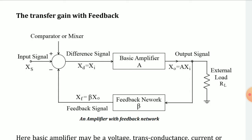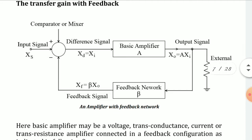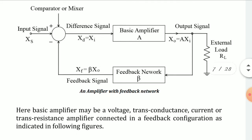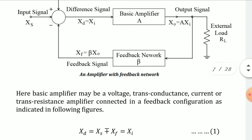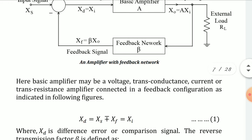Depending on the type of feedback, we have X_D equal to X_S plus or minus X_F. If it is negative feedback, we use the negative sign; if it is positive feedback, we use the positive sign. This is nothing but X_I, the input to the basic amplifier. Mark this as Equation 1.